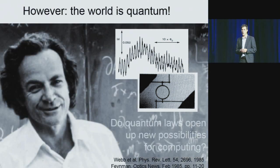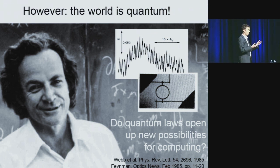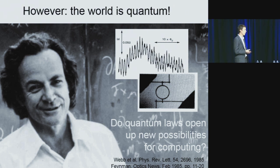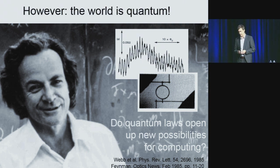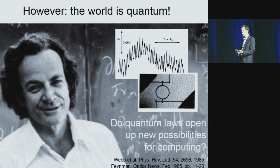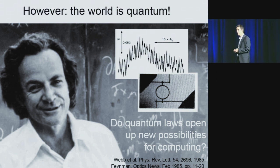This led the great physicist Richard Feynman to ask the question whether, in doing computation the way we've always done, we have really exhausted all the possibilities of computational power — the possibilities that nature has to offer. Couldn't it be the case that if we build computers based on quantum rules, we can compute in a fundamentally different way, and much faster than is possible with any machine today?